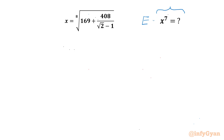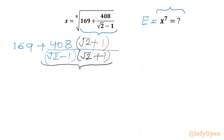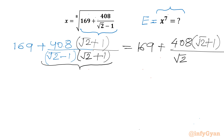Let's say this expression x power 7 equals e. Now we can simplify our radicands separately. I can write 169 plus 408 over root 2 minus 1. Now we can use rationalization of denominators — multiply with root 2 plus 1 in the denominator and numerator. In the denominator we have the algebraic form (a minus b)(a plus b), which we can write equal to 169 plus 408 times (root 2 plus 1) divided by root 2 squared minus 1 squared, using the difference of two squares formula.